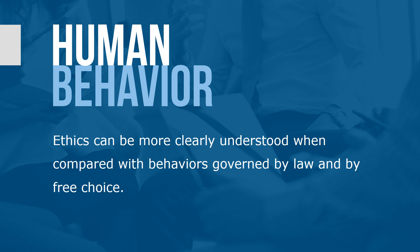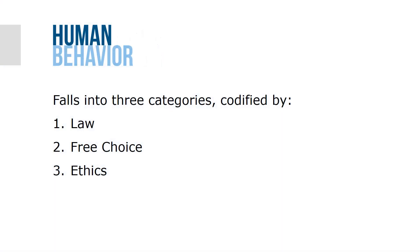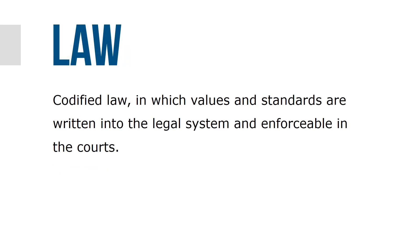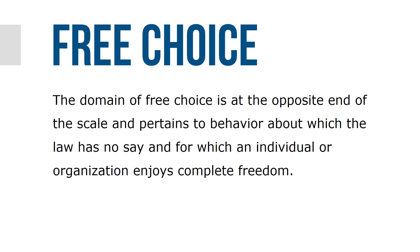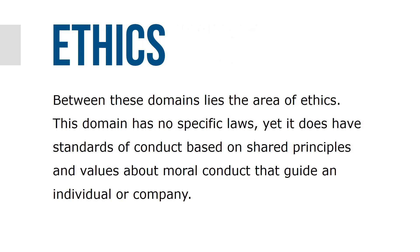Ethics can be more clearly understood when compared with behaviors governed by law and by free choice. Human behavior falls into three categories: codified law, free choice, and ethics. Codified law involves values and standards written into the legal system and enforceable in the courts, such as obtaining licenses for driving, paying corporate taxes, and following other local, state, and national laws. The domain of free choice pertains to behavior about which the law has no say, or for which an individual or organization enjoys complete freedom — for example, a manager's choice of where to buy a new suit, or an organization's choice between two well-qualified suppliers. Between these domains lies the area of ethics, which has no specific laws, yet has standards of conduct based on shared principles and values about moral conduct that guide an individual or an organization.